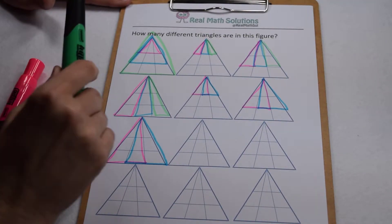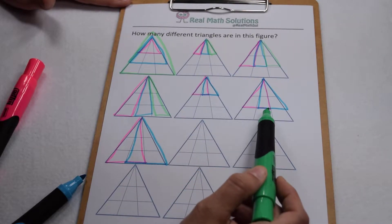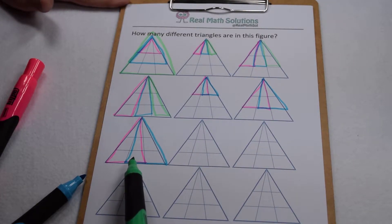So, so far we have three, six, nine, twelve, fourteen, sixteen, eighteen triangles that we found in there.